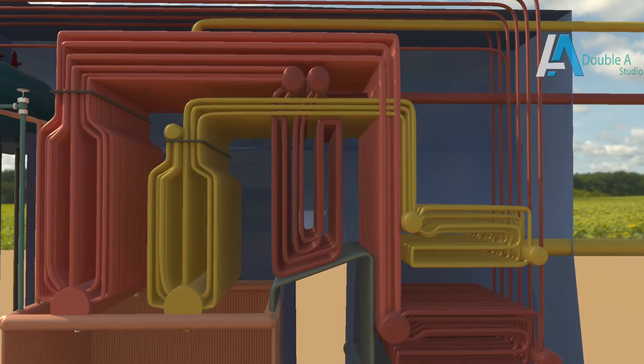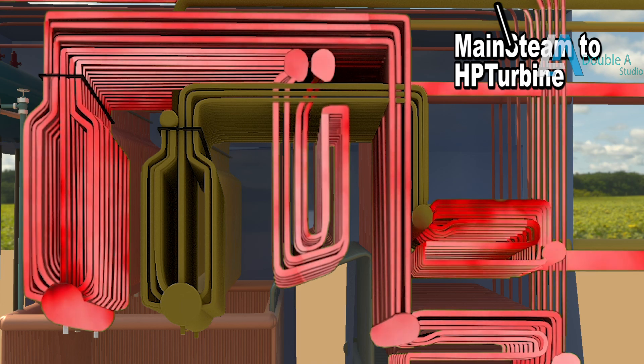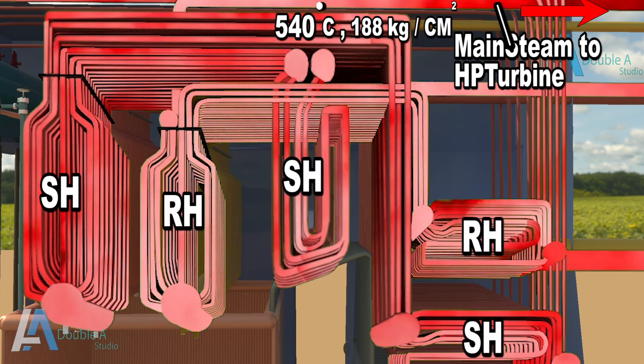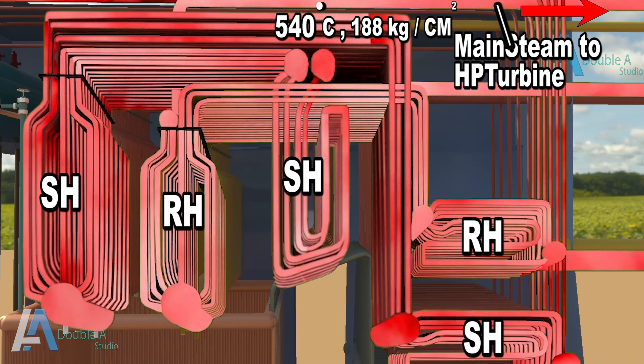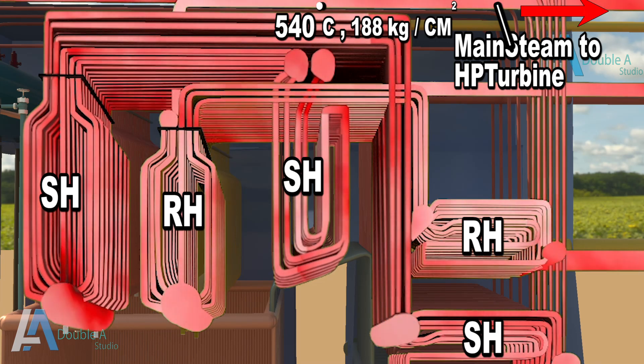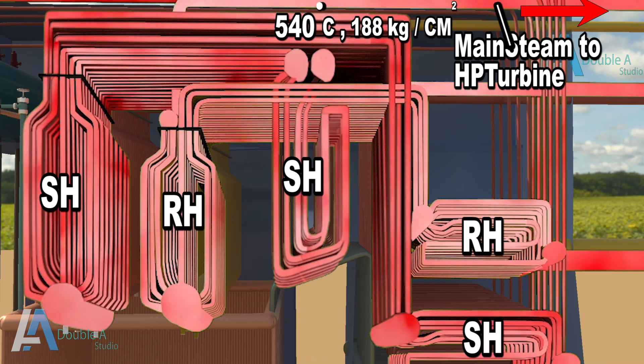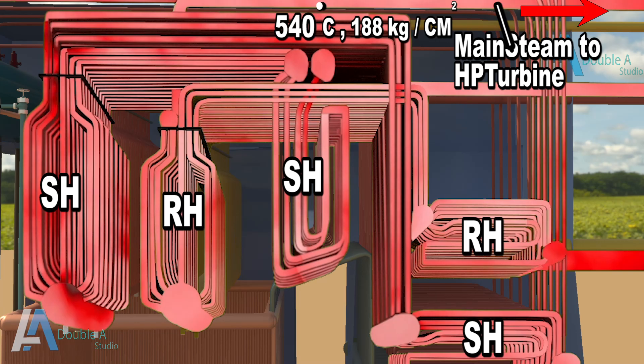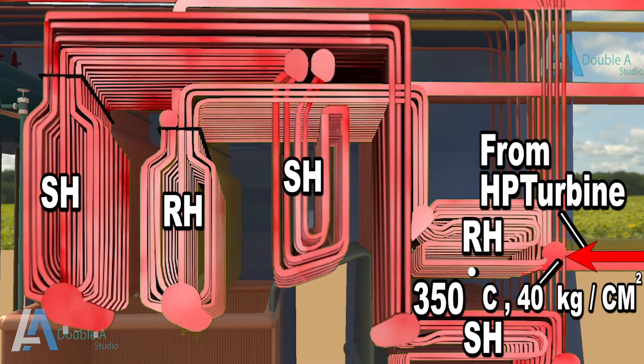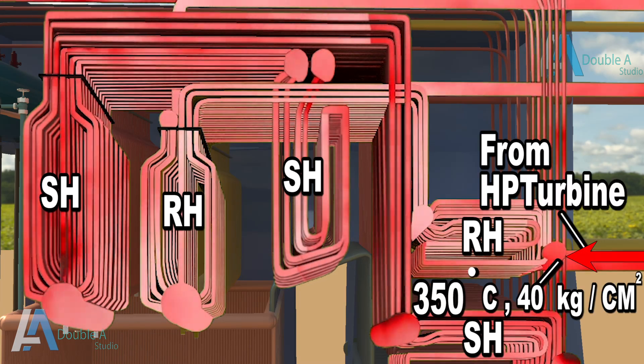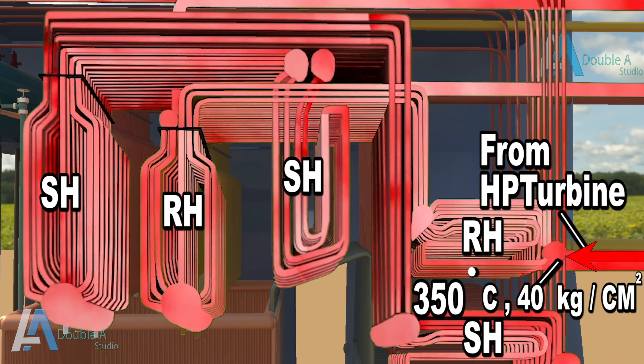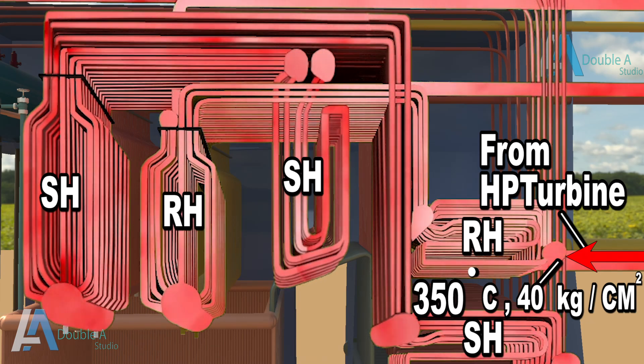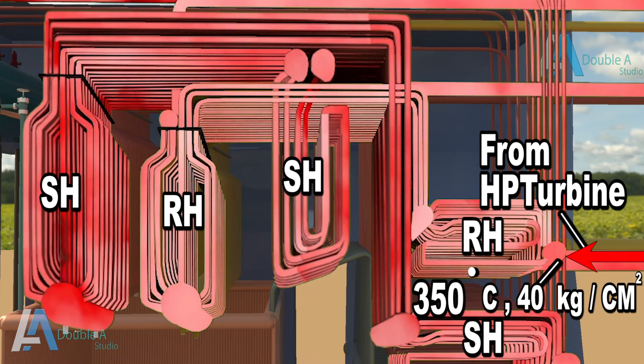To understand this process, let's recall superheated steam coming out of final superheater. This is also called main steam having temperature of 540 degrees centigrade and pressure of 188 kilogram per centimeter square. It enters HP turbine and expands there. Expansion of steam reduces its temperature and pressure to about 350 degrees and 40 kilogram per centimeter square respectively. These figures are indicative and will vary depending upon type and size of thermal plants setup.